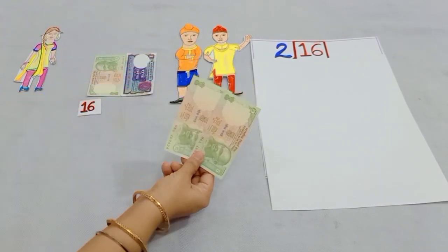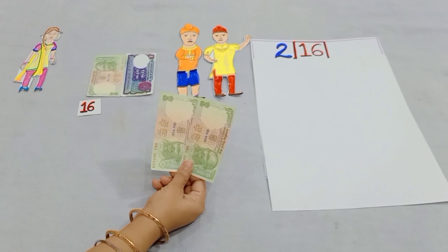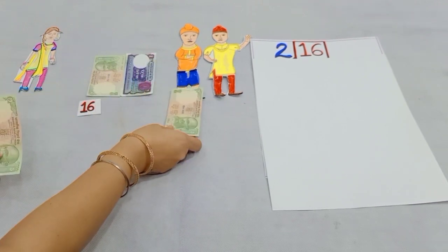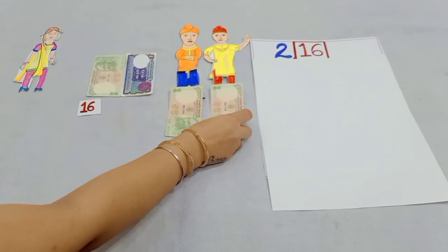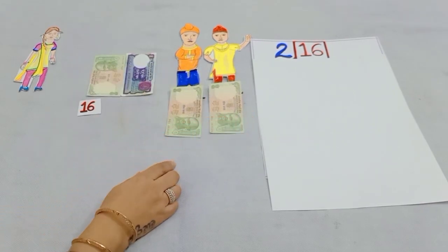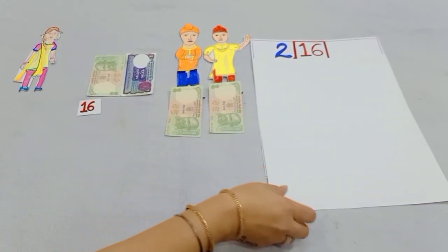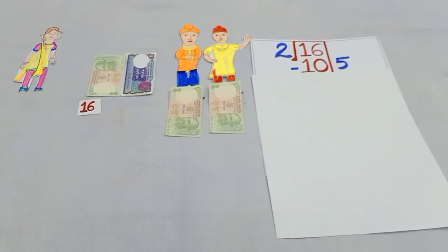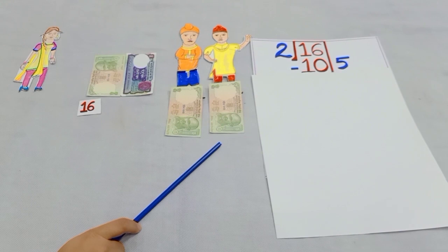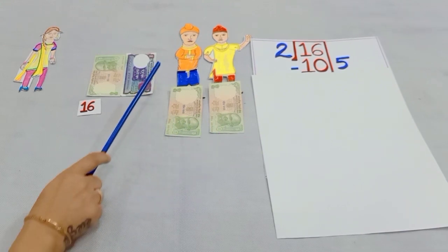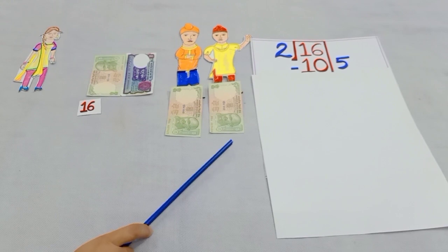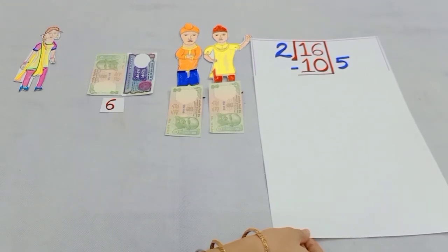she will take two notes of rupees 5 in place of one note of rupees 10. Now, she will equally divide rupees 5 to her each brother and that means 5 twos are 10. So, after dividing one one note of rupees 5 to her each brother, she is left with, yes, 6 rupees.